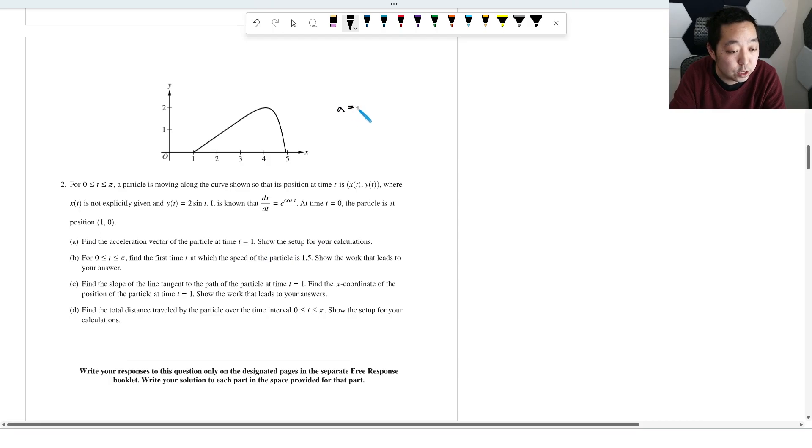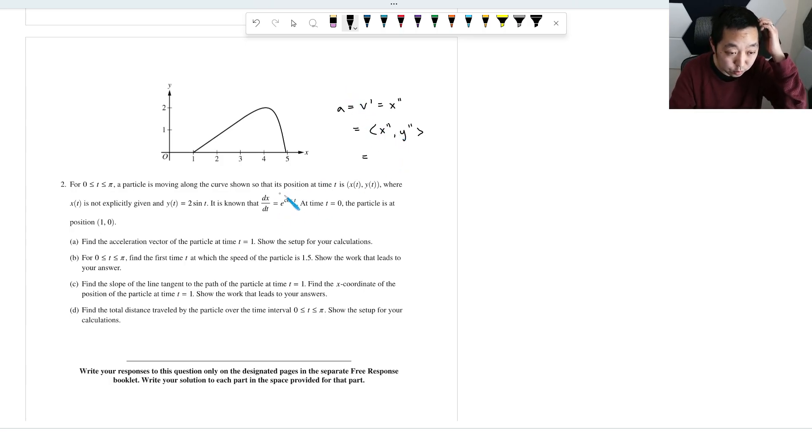So the acceleration is the derivative of the velocity, which is the second derivative of the position vector, which is really like x double prime, y double prime in terms of vector notation. You know, dx/dt is this. So really, for this guy, we're just going to do the second derivative. For the x component and the y component, we're just going to use this.